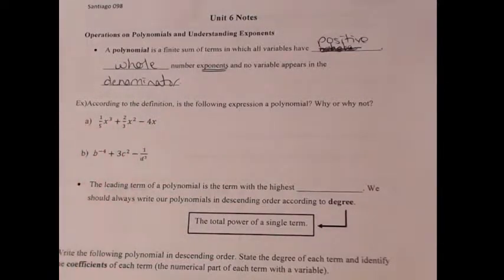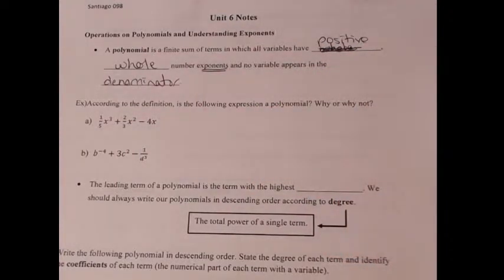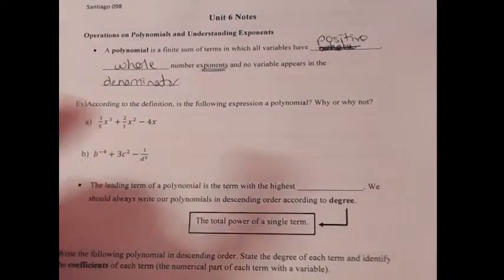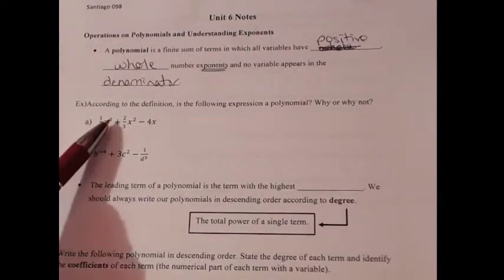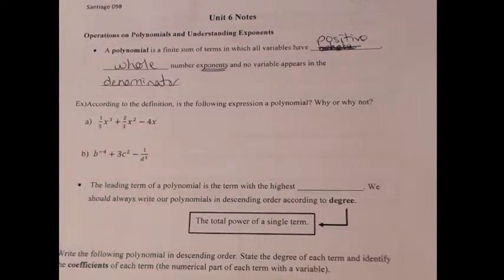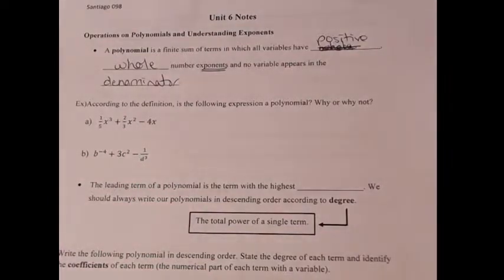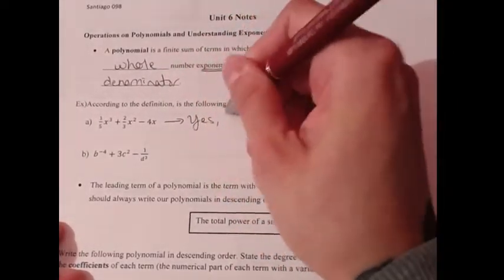Let's take a look at these expressions and determine whether or not they're polynomials. Our first one: one-fifth x to the third plus two-thirds x squared minus 4x. A polynomial is a finite sum of terms — we have three terms — and each has positive whole number exponents: x to the third, x to the second, x to the first. No variable in the denominator, so yes, this is a polynomial.